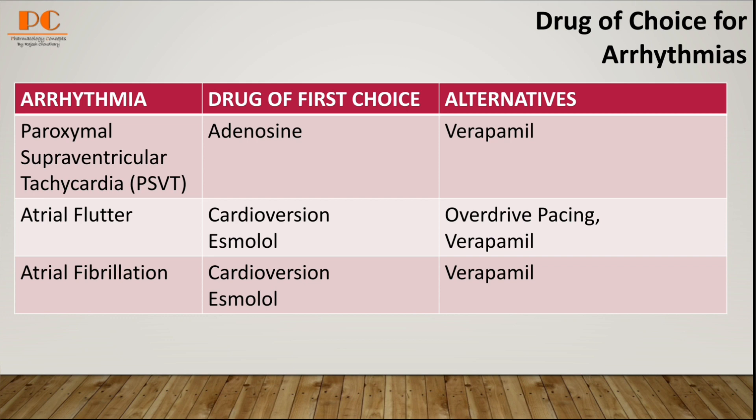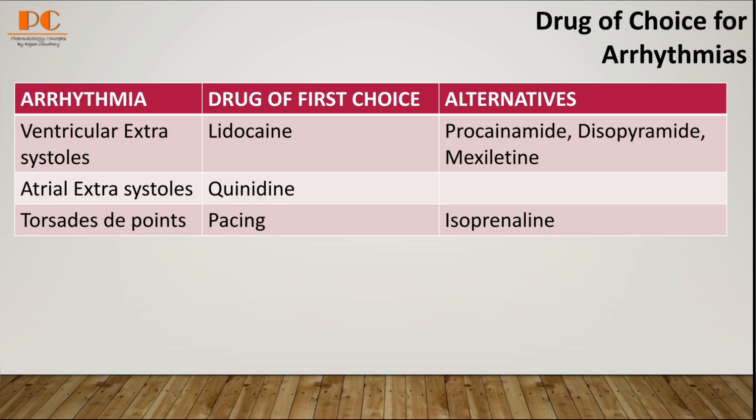For ventricular extrasystole, we can use lidocaine as the first choice. And procainamide, disopyramide, and mexiletine are the alternatives.